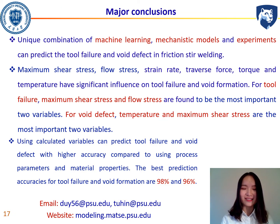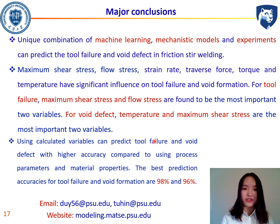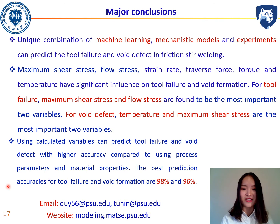In conclusion, we can use machine learning, mechanistic models, and experimental results to predict and reduce tool failure and void defects in friction stir welding. Six important computed variables can be calculated directly using the mechanistic model. For tool failure, maximum shear stress and flow stress are the two most important variables; for void defects, temperature and maximum shear stress are most important. The computed variables show better prediction performance, with best accuracies of 98% for tool failure and 96% for void formation. Thank you for listening. Have a good day.